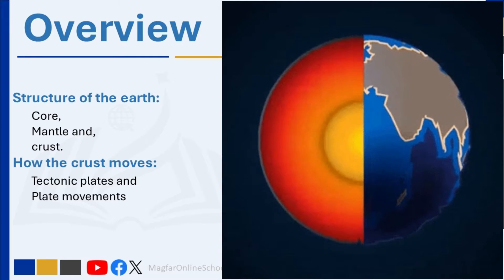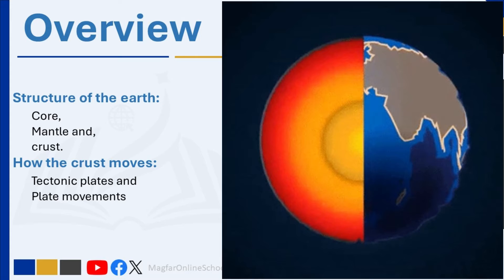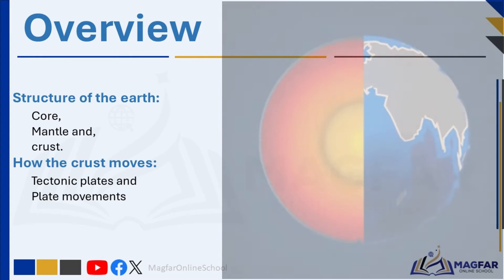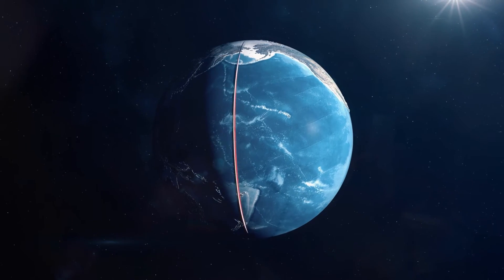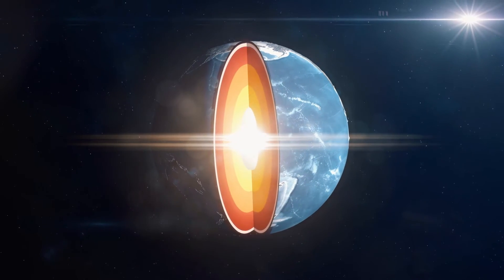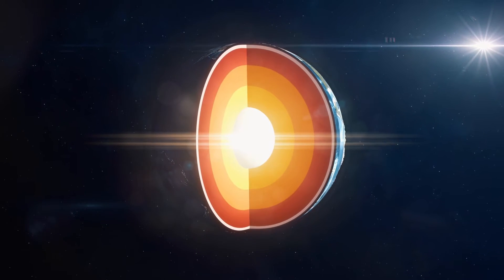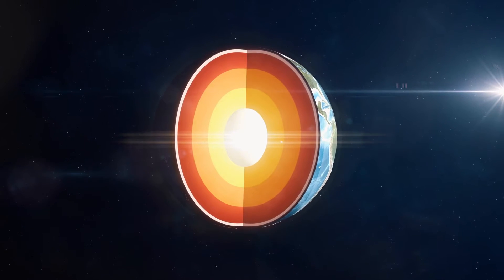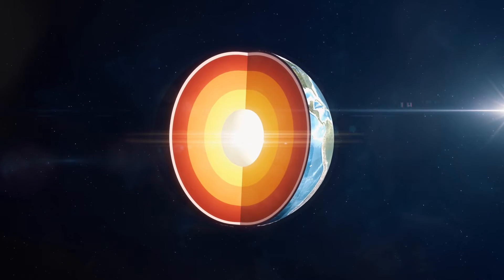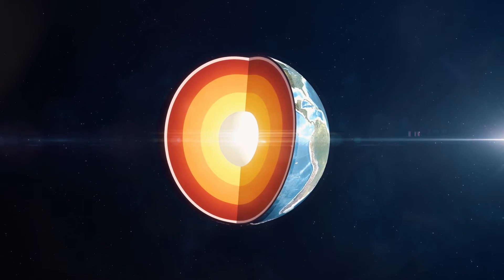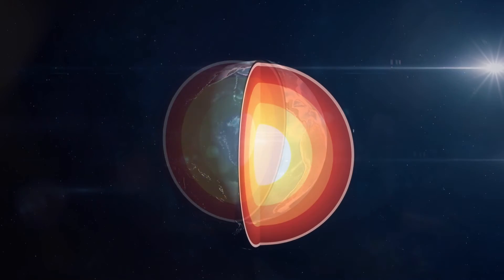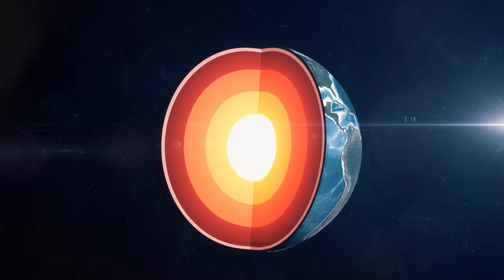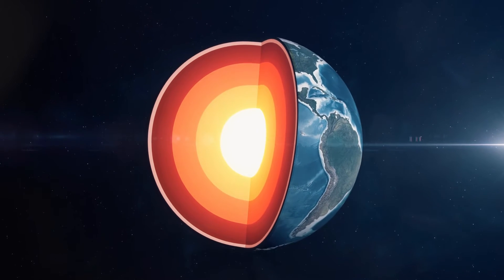The Earth is composed of three main layers: the crust, the mantle, and the core. Each layer has its own properties and compositions. The crust is the solid outer part of Earth. The mantle is an area of hot molten rock beneath Earth's crust. Molten refers to something heated to a very high temperature so that it becomes liquid. The core is at the center of Earth and has two parts: the inner core and the outer core. Understanding the structure of the Earth provides insight into its geological processes and phenomena.